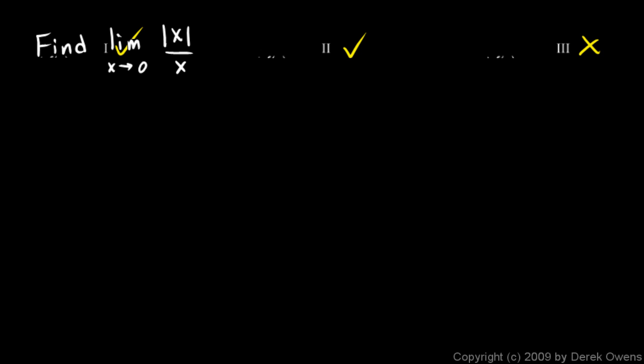And one more. We're told to find the limit as x approaches 0 of the absolute value of x over x. So what does this graph look like, absolute value of x over x? Well, let's plot a few points.